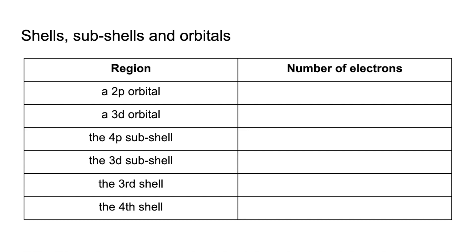Okay, so the first two are both orbitals. Doesn't matter what type of orbital it is, the maximum number of electrons you can put in any orbital is two. So that's the answer for those.